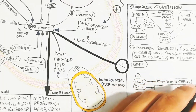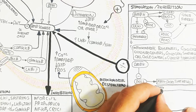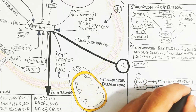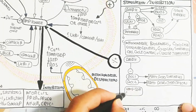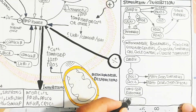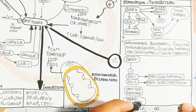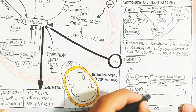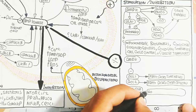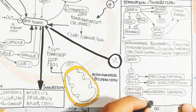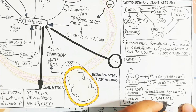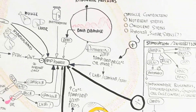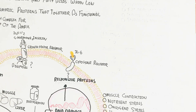AMPK inhibits ACC1 and ACC2, which are involved in fatty acid synthesis and fatty acid oxidation regulation. AMPK also inhibits HMG-CoA reductase, meaning cholesterol synthesis is blocked. AMPK additionally inhibits SREBP1, HSL, and raptor, leading to inhibition of lipogenesis predominantly.